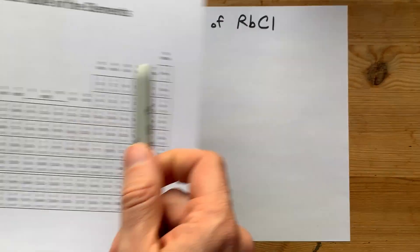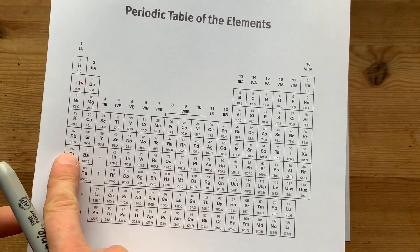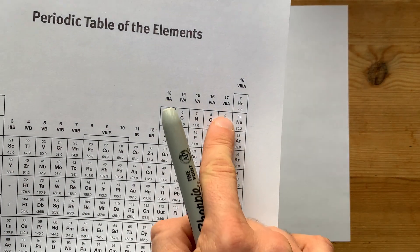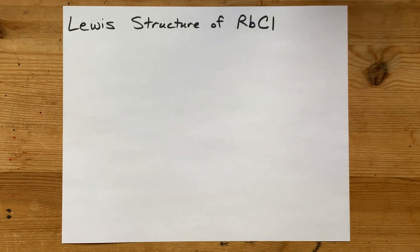Rubidium is a metal, one of the alkali metals from group 1. Chlorine is a non-metal, one of the halogens from group 17.